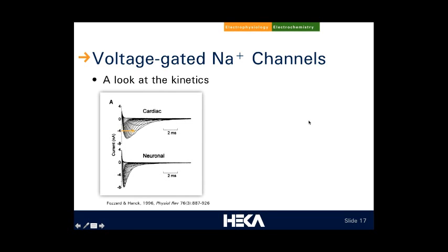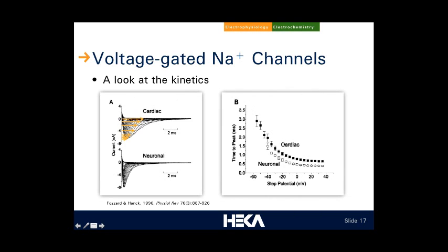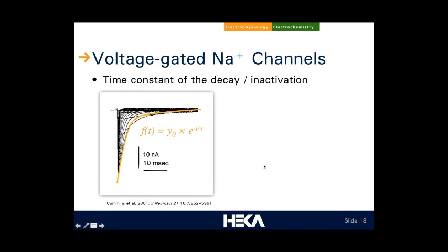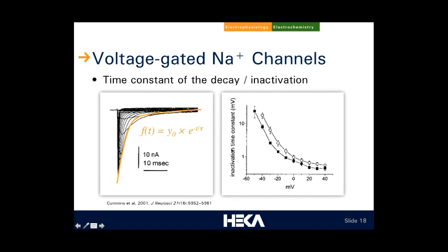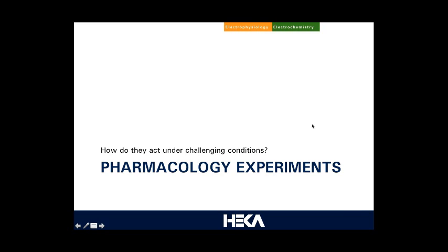One more parameter people like to look at is the time to peak of the inward current after the depolarizing step. Measuring that time for all depolarizing steps, you look at the kinetics — in this case comparing two different preparations, cardiac and neuronal cells. Another parameter is the time constant of the decay, or inactivation, after the peak of the sodium inward currents. This can be described by an exponential function, and looking at the time constant tau, you can see differences between cell types or conditions you want to compare.